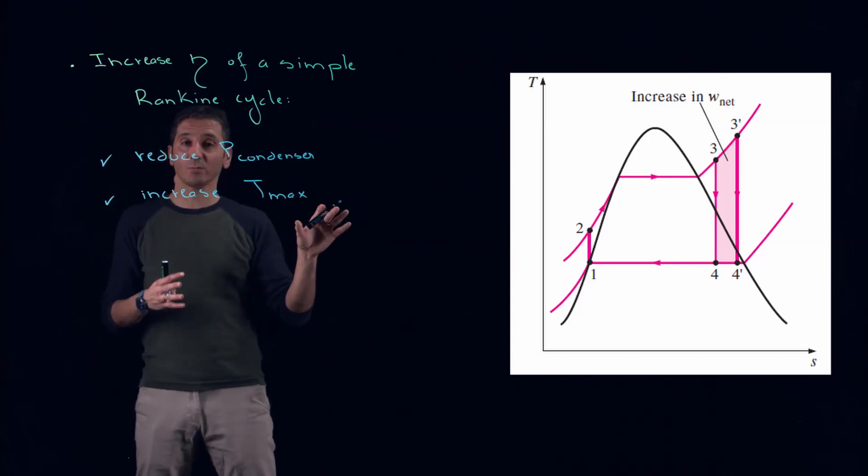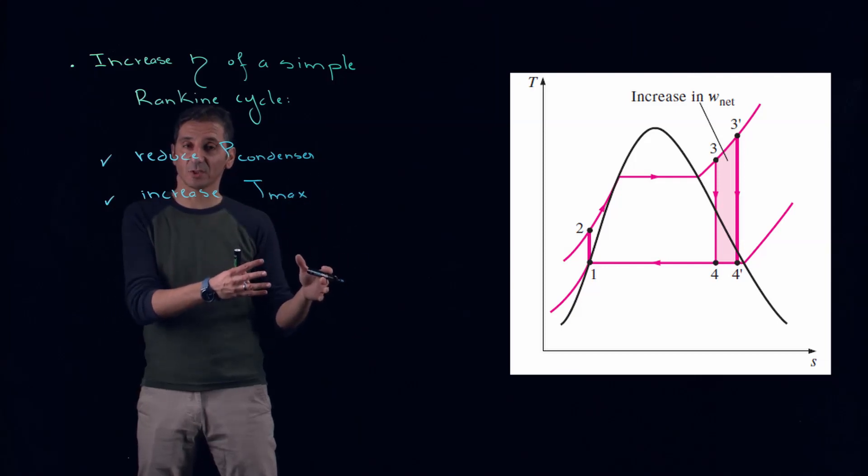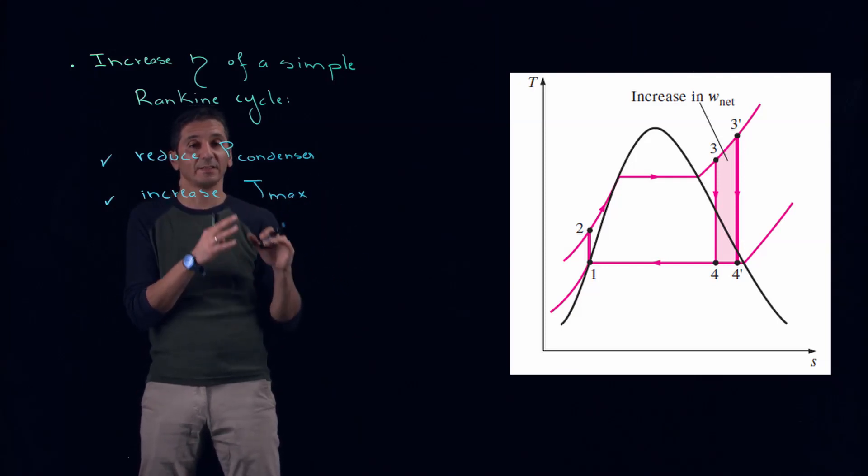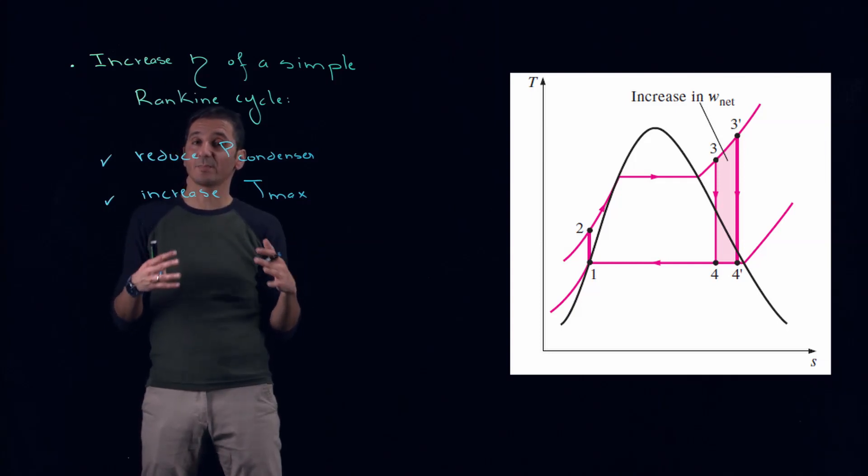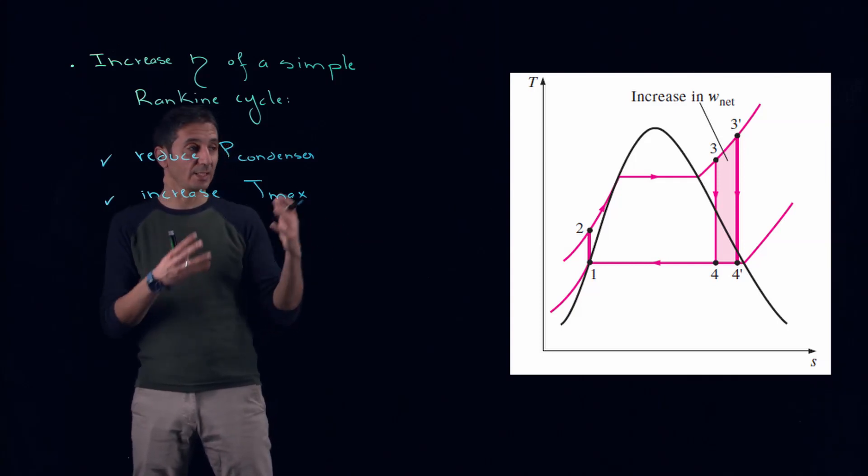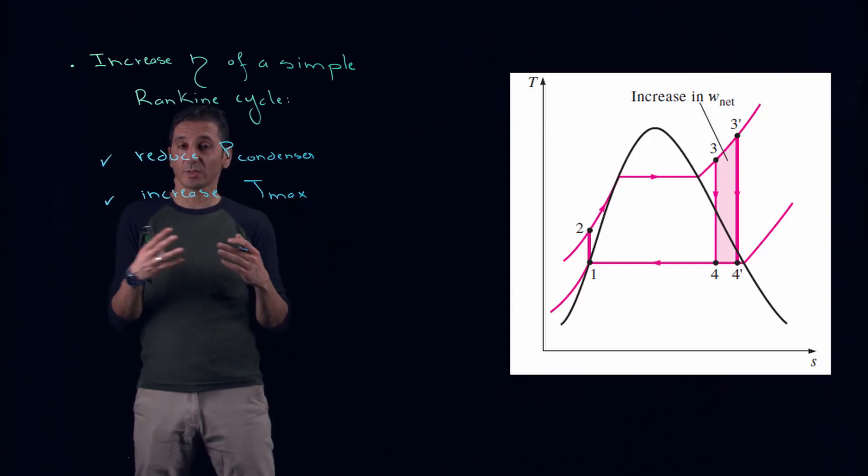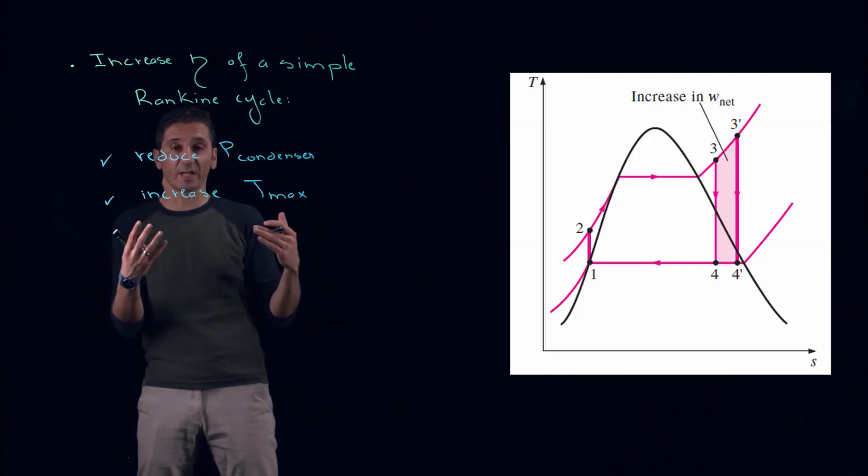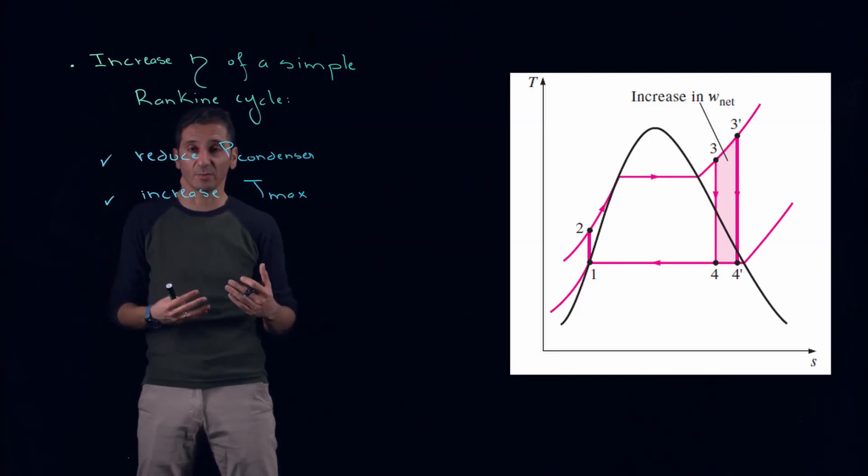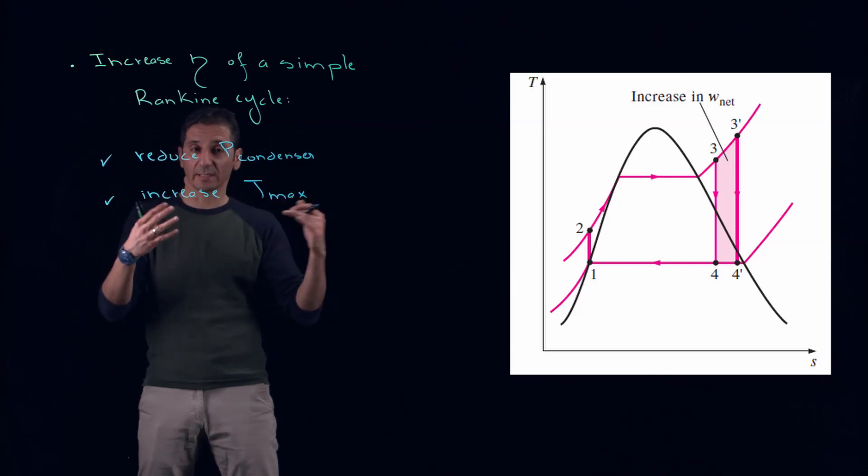Now, basically, we will calculate again the thermal efficiency, but we have to keep in mind that there is a limit, and this limit is set by your material properties. In steam power cycles, in steam turbines, you cannot increase the maximal temperature beyond 700 degrees Celsius. So we'll reach a certain limit.